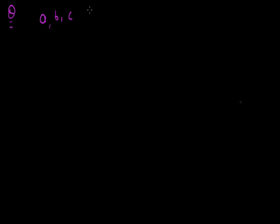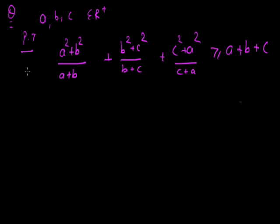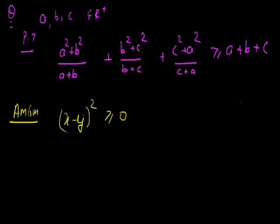A, B, C again belong to real positive numbers. Prove that (A² + B²)/(A + B) plus (B² + C²)/(B + C) plus (C² + A²)/(C + A) is greater than or equal to A plus B plus C. It is very difficult to understand how to solve this problem by AM-GM inequality, so let me give you a simple approach. We know that (X minus Y)² is greater than or equal to 0, therefore X² plus Y² minus 2XY is greater than or equal to 0, which means X² plus Y² is greater than or equal to 2XY.